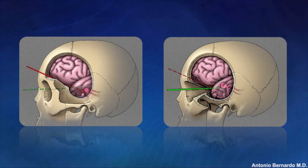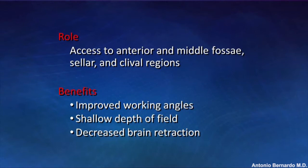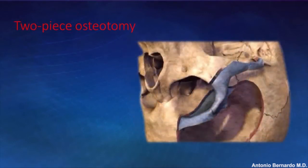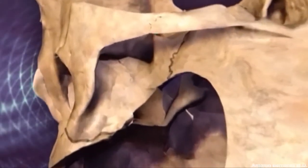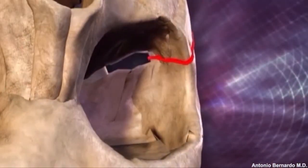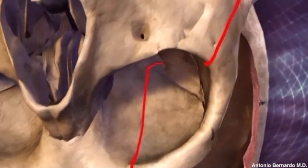By removing the roof of the orbit, it is possible to change the inclination of the microscope. The orbital zygomatic approach provides access to anterior and middle fossa cellar clivus region with improved working angles. It could be done in one-piece or two-piece osteotomy. The two-piece orbito-zygomatic approach combines the pterion approach with osteotomies that remove the superior and lateral wall of the ipsilateral orbit and zygomatic arch.